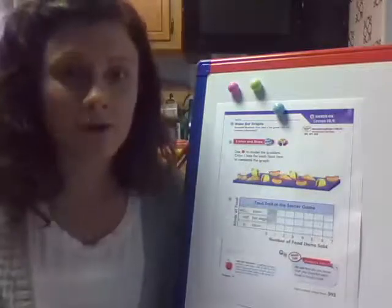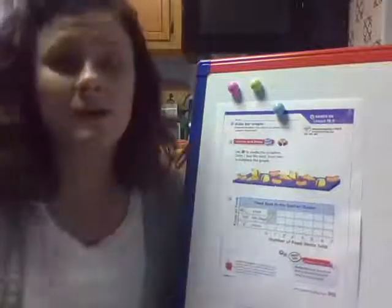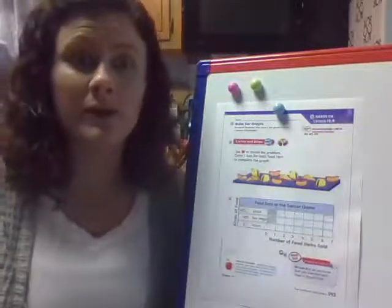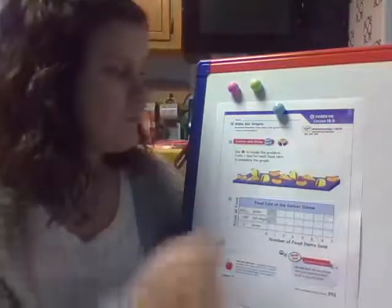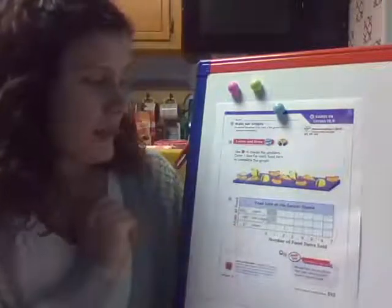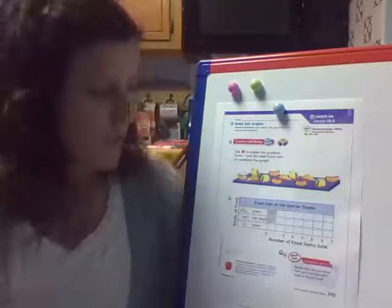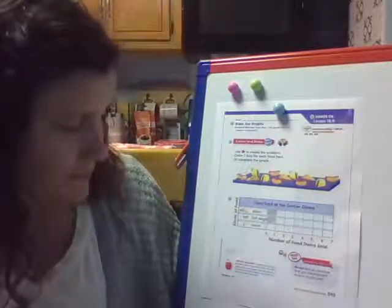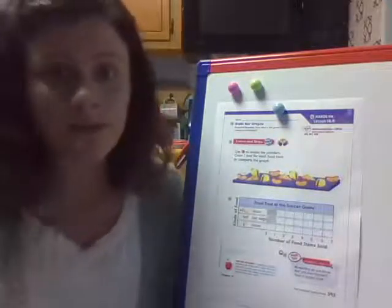Okay, so let's look at our graph. It says making bar graphs. Our essential question says: how does a bar graph help you compare information? When we're doing our activity today, we're going to be noticing that we want to compare things and look at what has more or what has less. For our graph today, it says color one box for each food item to complete the graph. Let's read the problem: Dan keeps track of the food he sells at the soccer game. He sells all of the food on the table. Make a bar graph to show the food that Dan sells.